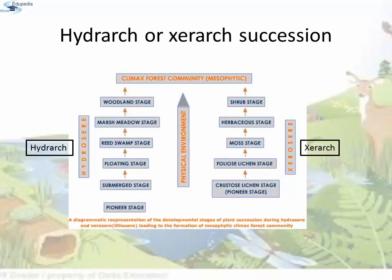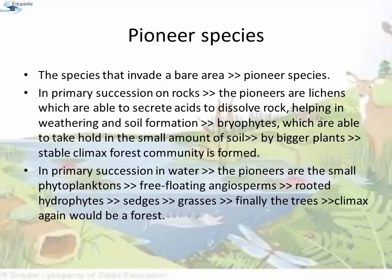In both cases it will end up in the climax forest community, i.e. mesophytic. The species that invade a bare area are called pioneer species. In primary succession on rocks, these are usually lichens which are able to secrete acid to dissolve rock, helping in weathering and soil formation. These later pave way to small plants like bryophytes. With time these are succeeded by bigger plants, and after several more stages, ultimately a stable climax forest community is formed. The climax community remains stable as long as the environment remains unchanged. With time, the xerophytic habitat gets converted into a mesophytic one.